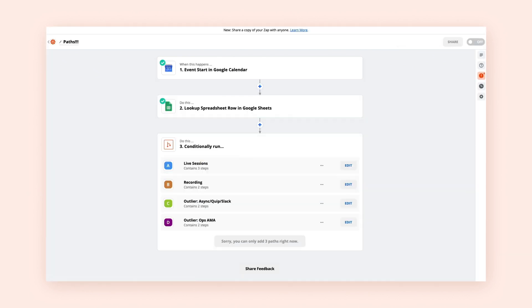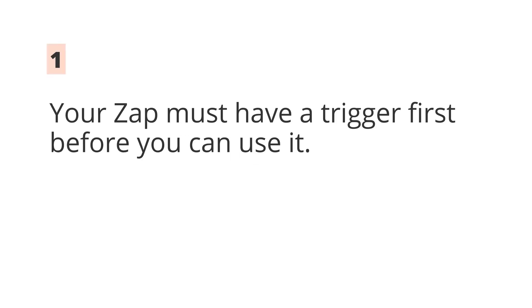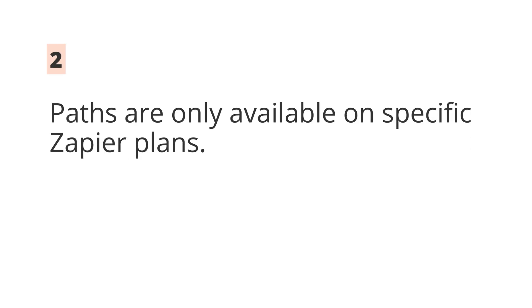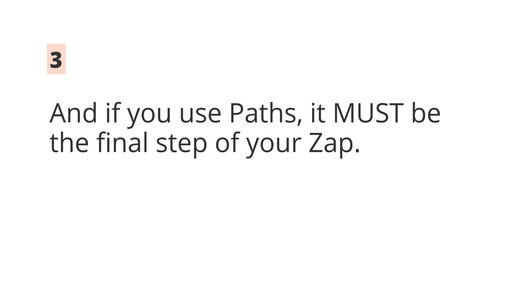Each path can use a different app for the next step if you'd like. A few things to note about Paths: your Zap must have a trigger first before you can use it. Paths are only available on specific Zapier plans. And if you use Paths, it must be the final step of your Zap. When your Zap has to make a choice, try Paths. We'll see you in the next lesson.